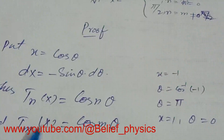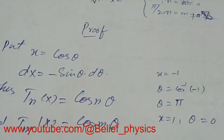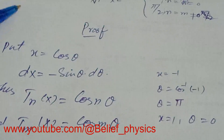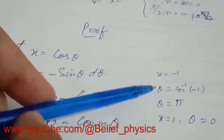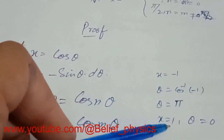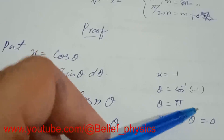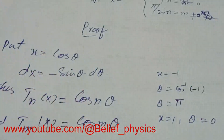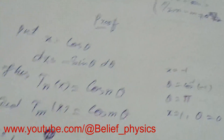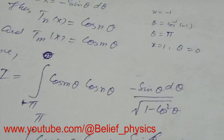Now for the limits: when x is minus one, theta equals cos inverse of minus one, so theta equals pi. When x equals one, theta equals cos inverse of one, which is zero. So the limits become pi to zero.